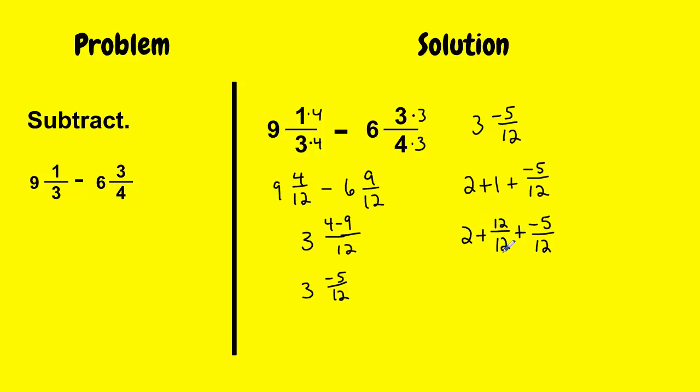And now that I have 12 over 12, I can actually combine that with this fraction. So I'm going to get 2 plus 12 minus 5 over 12, which is 2 plus 7 over 12. And 2 plus 7 over 12, well, that's just 2 and 7 twelfths. So that's my final answer because I have an integer and a proper fraction, and that's a mixed number.